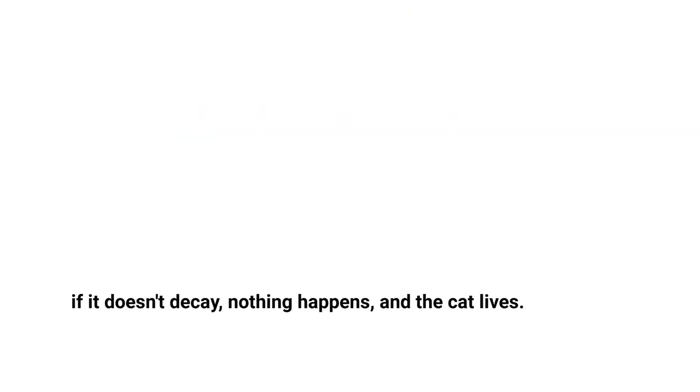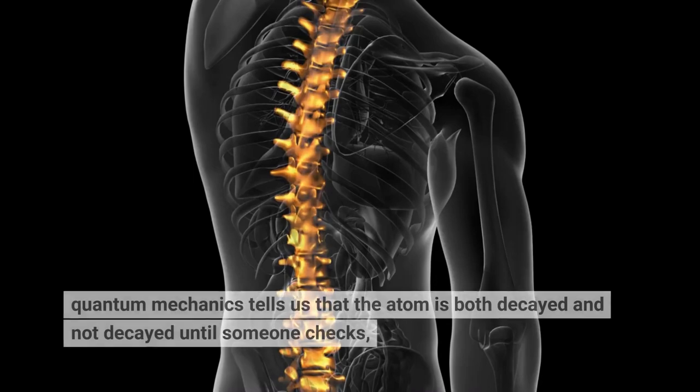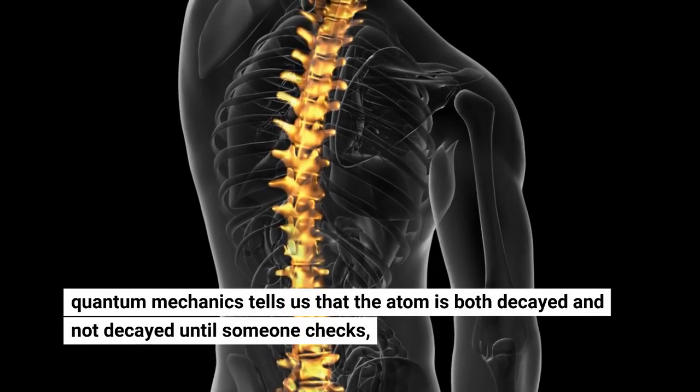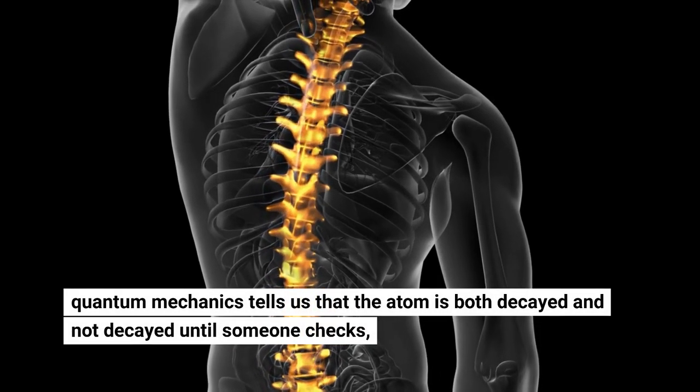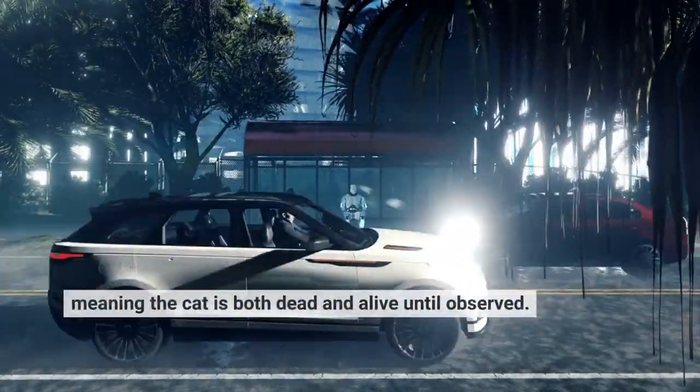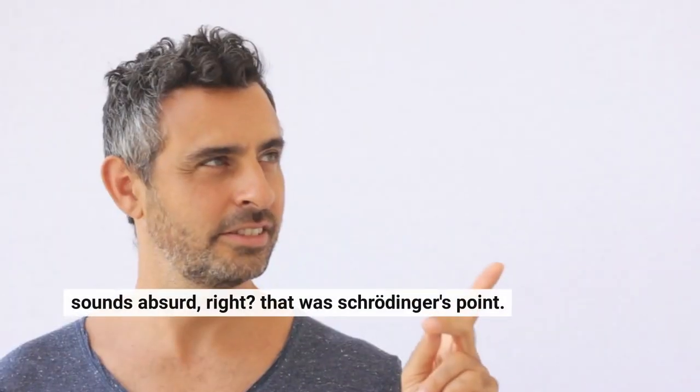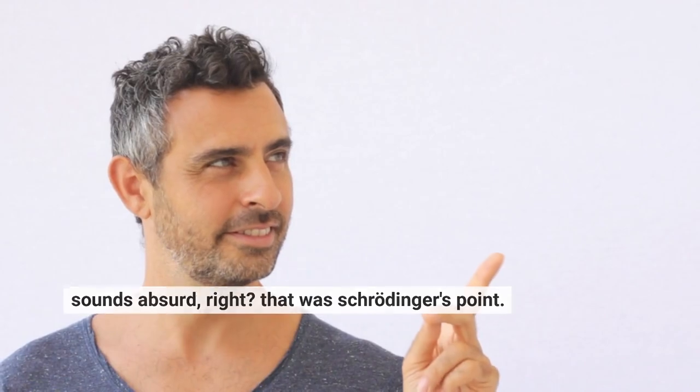If it doesn't decay, nothing happens, and the cat lives. Quantum mechanics tells us that the atom is both decayed and not decayed, until someone checks. Meaning the cat is both dead and alive until observed? Sounds absurd, right? That was Schrödinger's point.